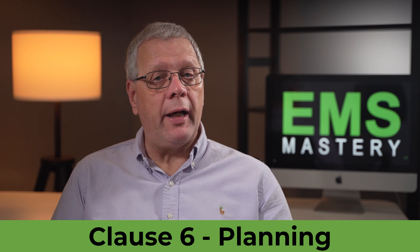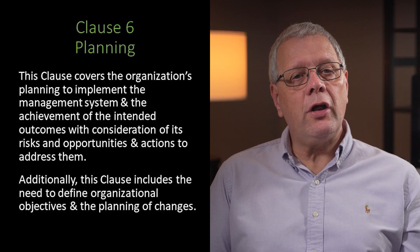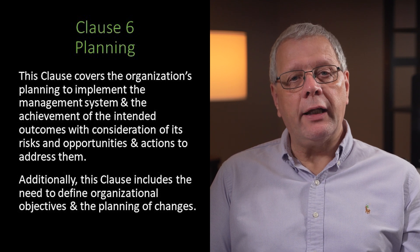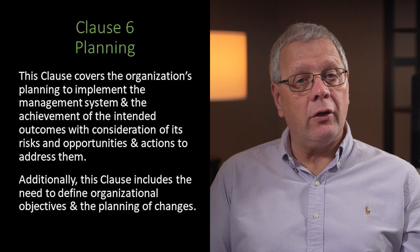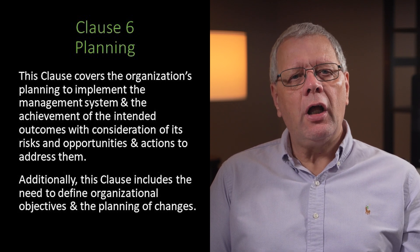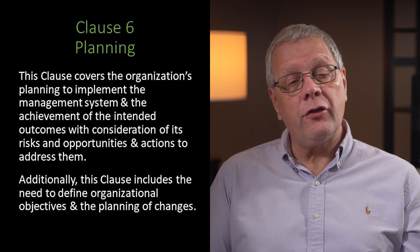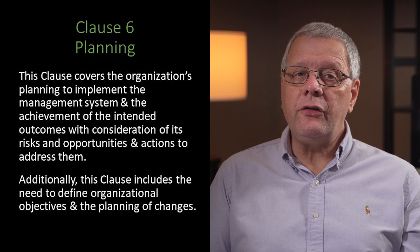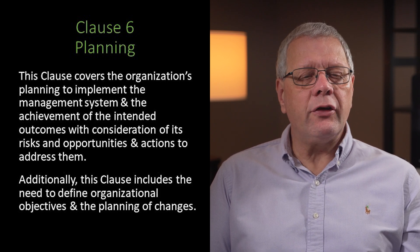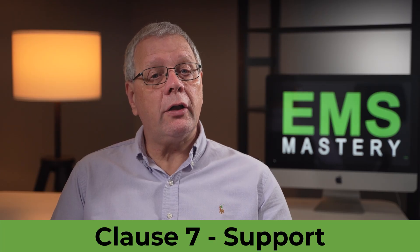To provide planning for the management system, Clause 6, Planning, covers the organisation's planning to implement the management system and the achievement of the intended outcomes, with consideration of its risks and opportunities and actions to address them. Additionally, this clause includes the need to define organisational objectives and the planning of changes.